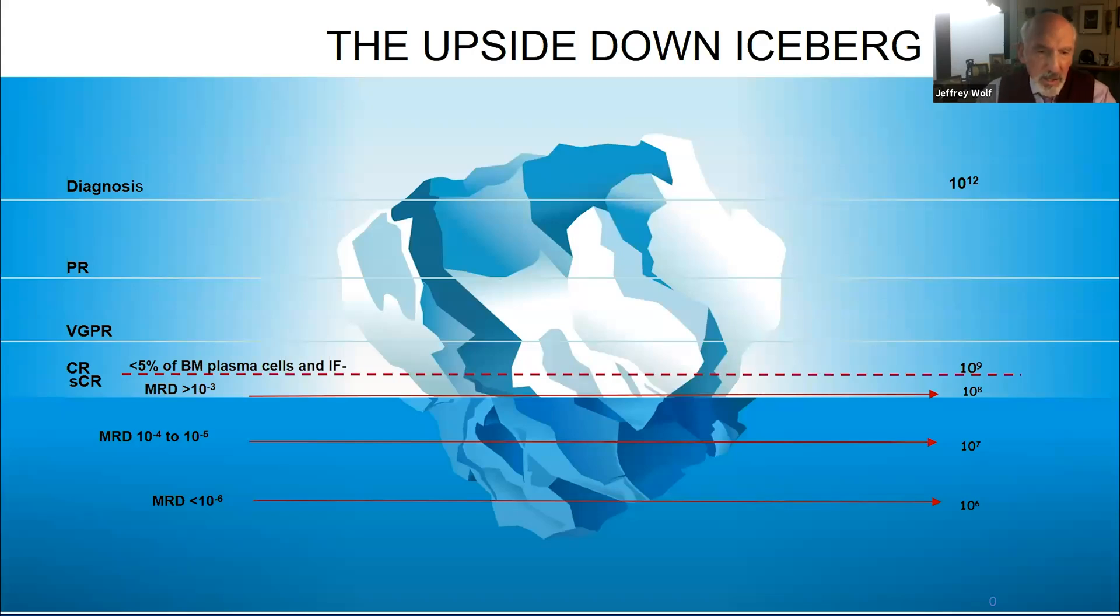By the time the iceberg melts enough to be at the water's surface, a lot of the cancer is gone, but there's still cancer remaining that is not measured by M spike or light chain. It's under the water and it's invisible to us if we just rely on the conventional assays that we've been doing for the last few decades.